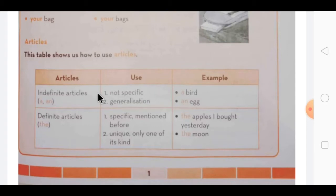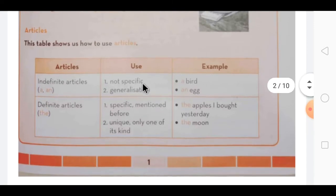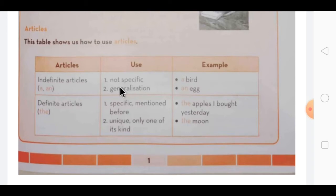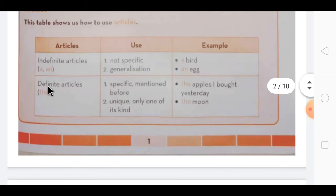A and an are used when it's not specific, when we don't know about that thing. That time we use a and an, or for generalization, for general things we use that. And a is used with consonants and an is used with vowels.